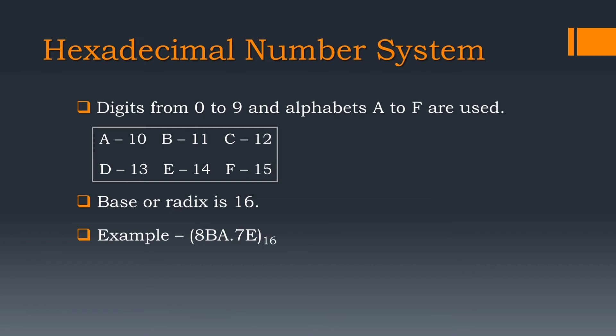So from these four types, we can generalize one thing: any number system with base n will have n number of digits starting from 0 to n-1.